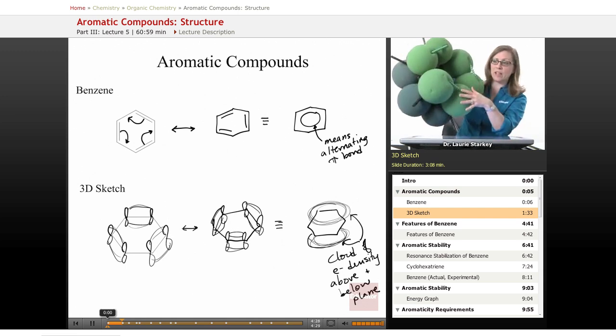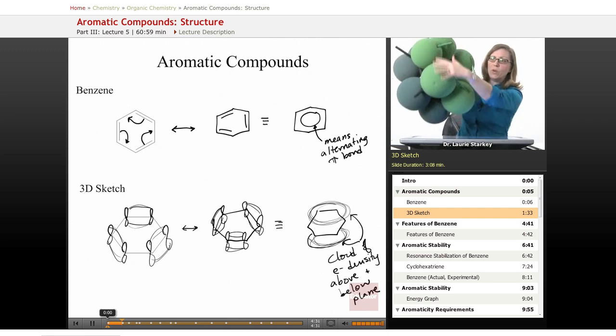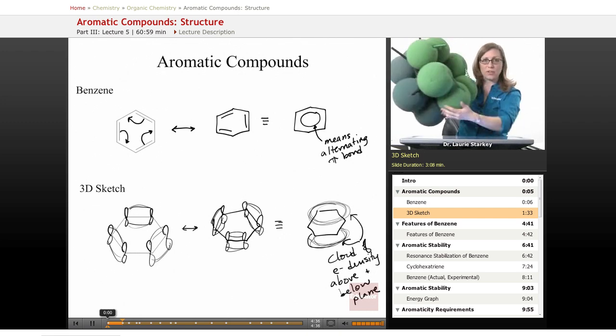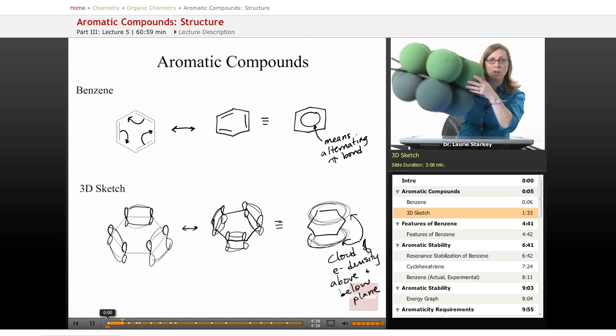So even though we can think of this as three double bonds, really there is no distinction between a double bond and a single bond here, because those electrons are equally distributed throughout the plane.